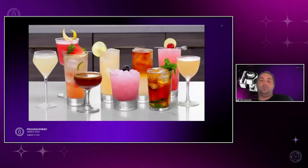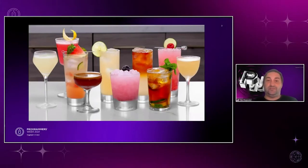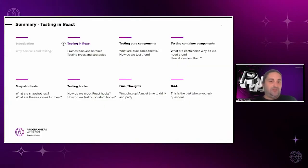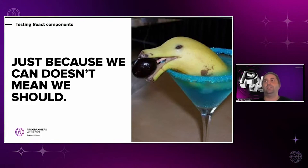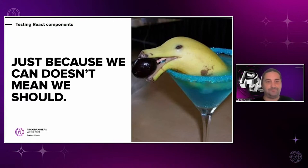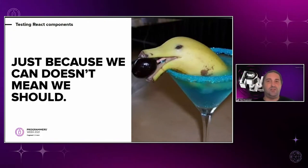When you're done writing and testing your units of code, you combine them together and start testing their integrations — kind of the same as when you're mixing drinks. In software development, you have different testing strategies, and those strategies differ from project to project. You can also combine multiple strategies to feel confident of your changes. Now that we've seen the connection between drinking and testing, let's talk about React and unit testing in React.